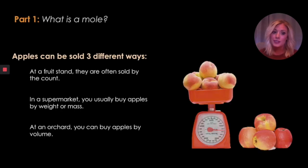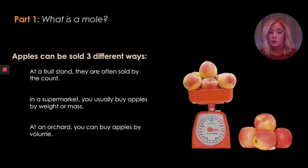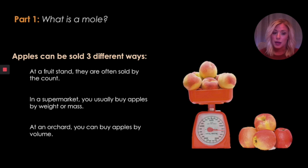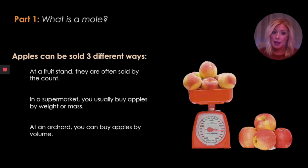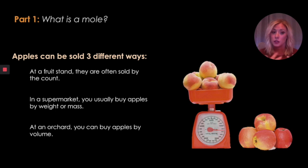So what is a mole? A mole is a unit that we use to quantify a group of things — it's a group of items. People use quantifying things by groups in a lot of different ways. One way we use this in real life is that we sell apples three different ways. You can sell them by count at a fruit stand, by weight at a supermarket, or by volume at an orchard using a bucket, bag, or bushel. So we can literally count things by count, mass, or volume.